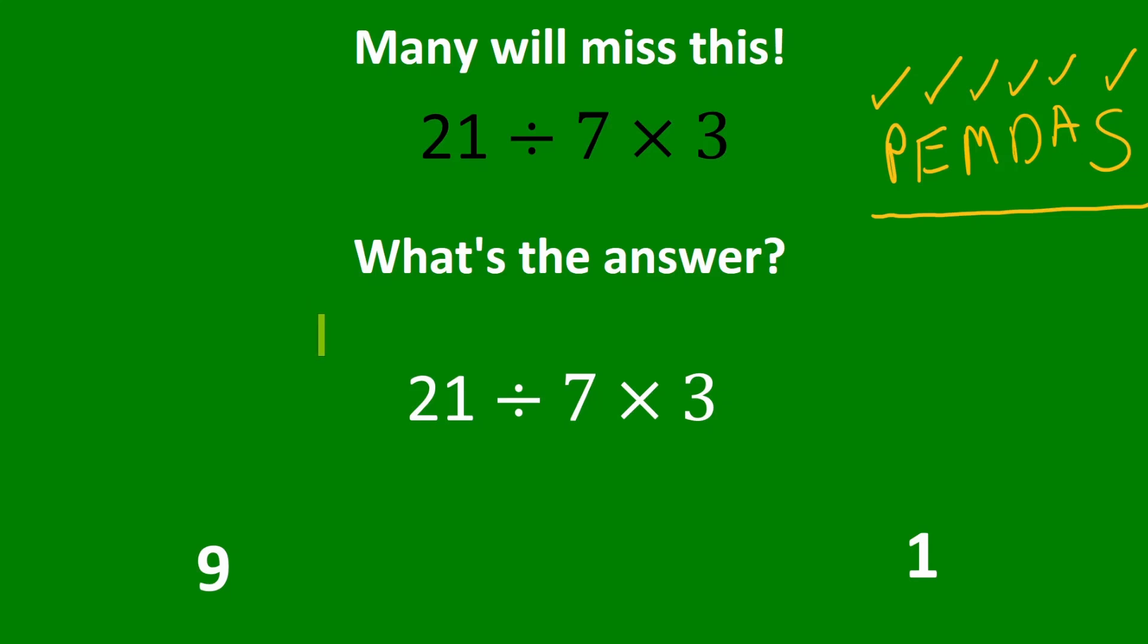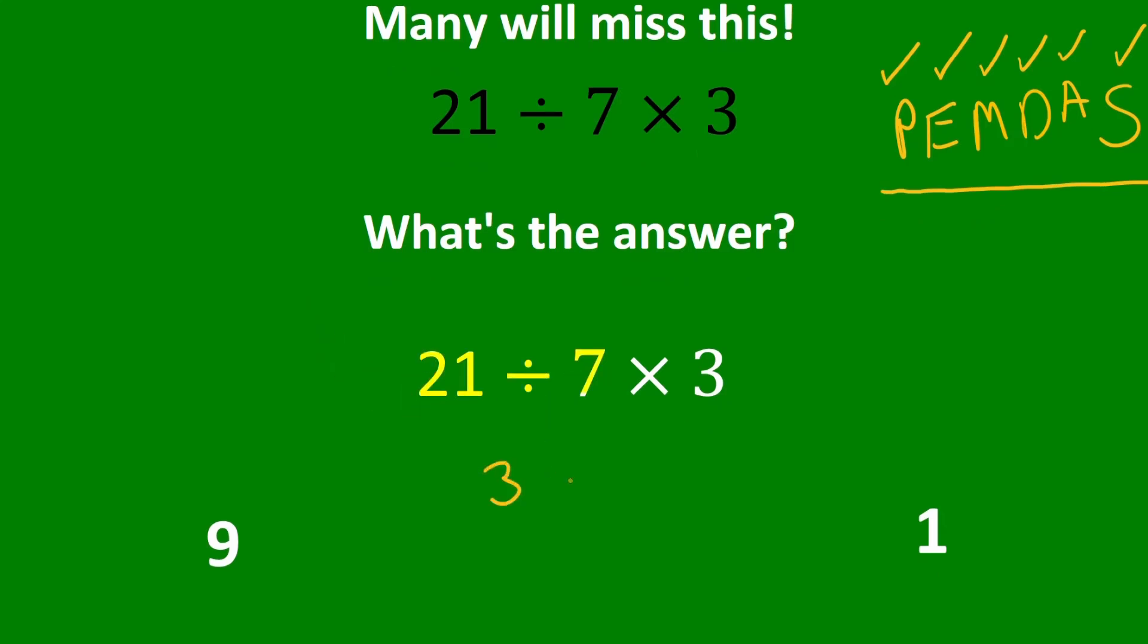Well here we first have to take 21 divided by 7, which gives us 3, and then finally do the multiplication, 3 times 3, which gives us 9. So in fact our answer here is 9.